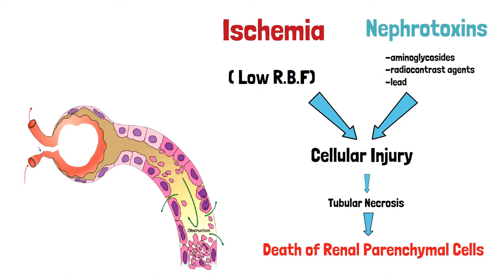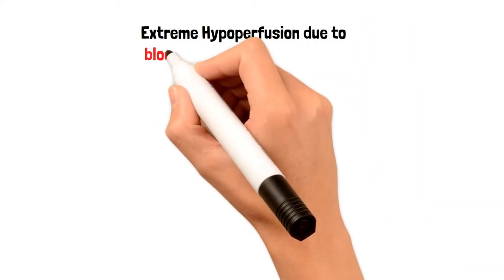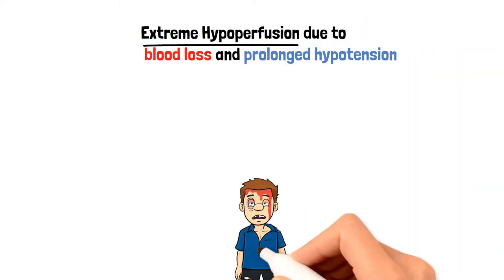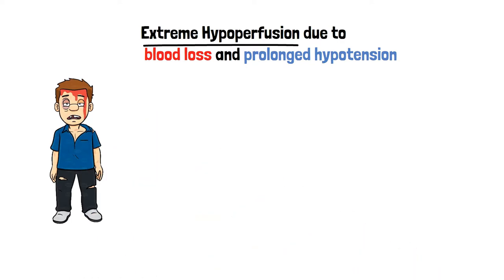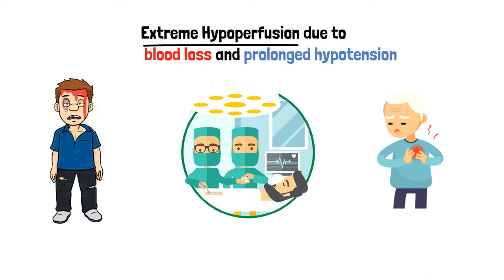A person with acute tubular necrosis will present with extreme hypoperfusion due to blood loss and prolonged hypotension. This can occur in any kind of trauma or accident, any major surgery with severe blood loss, and especially in cases of myocardial infarction or heart attack, when cardiac output decreases leading to ischemic damage to the kidney.